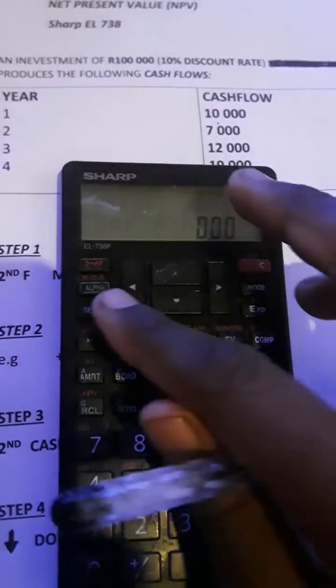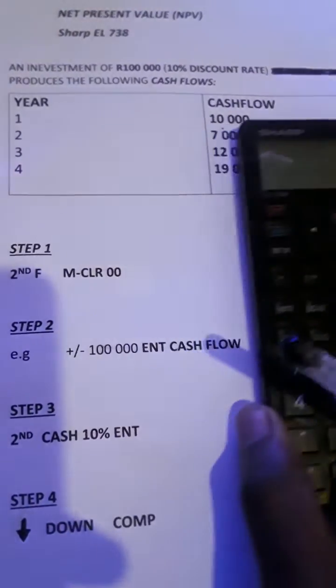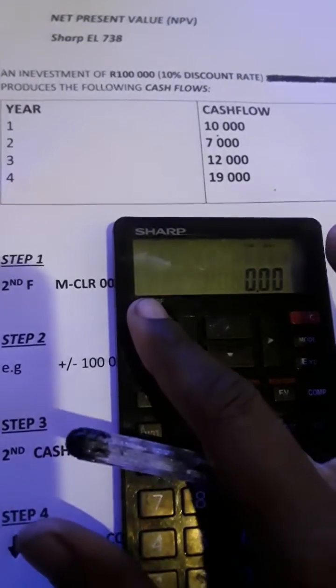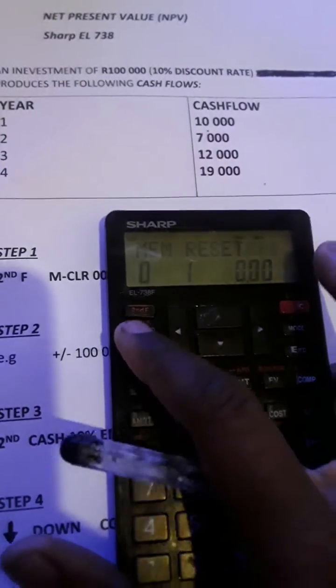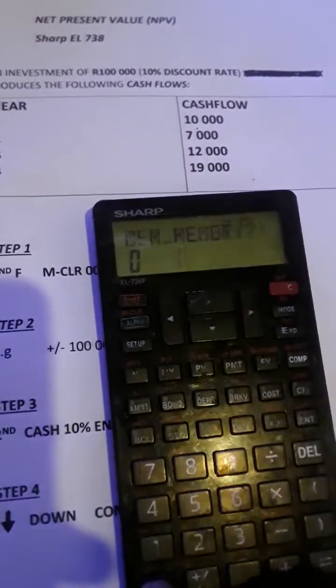We first have to clear the memory. Second function, M-Clear, then zero zero. Right. And now the second step, we have to enter the initial investment of 100,000 into the cash flow memory.